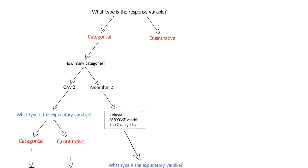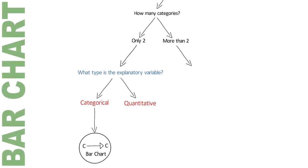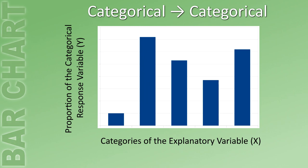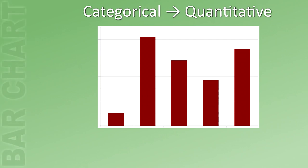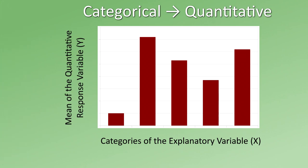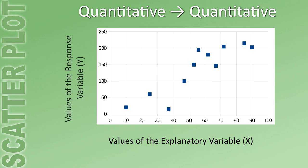We have worked through each type of bivariate graph, highlighting when and how each should be used to visualize a relationship. To summarize: when visualizing a categorical-to-categorical relationship, we use a bar chart with explanatory categories on the x-axis and the proportion of our response variable on the y-axis. When visualizing a categorical-to-quantitative relationship, we use a bar chart with explanatory categories on the x-axis and the mean of our response variable on the y-axis. When visualizing a quantitative-to-quantitative relationship, we use a scatterplot in which each observation is displayed according to the values of the explanatory and response variables. Use these basic guidelines, as well as the graphing decisions flowchart, to visualize the relationships between your own variables of interest.